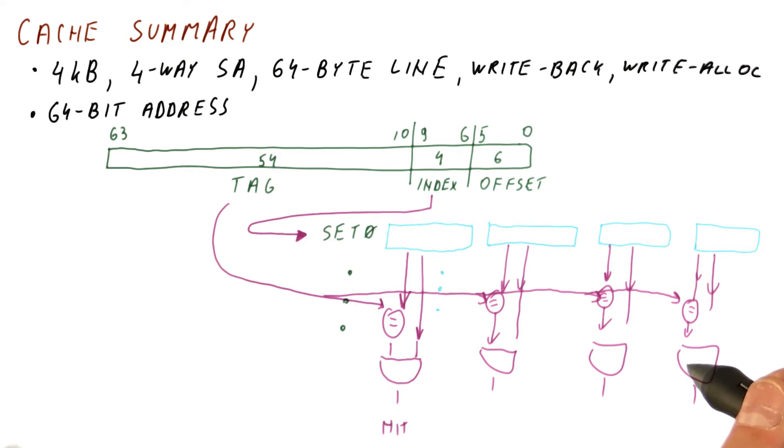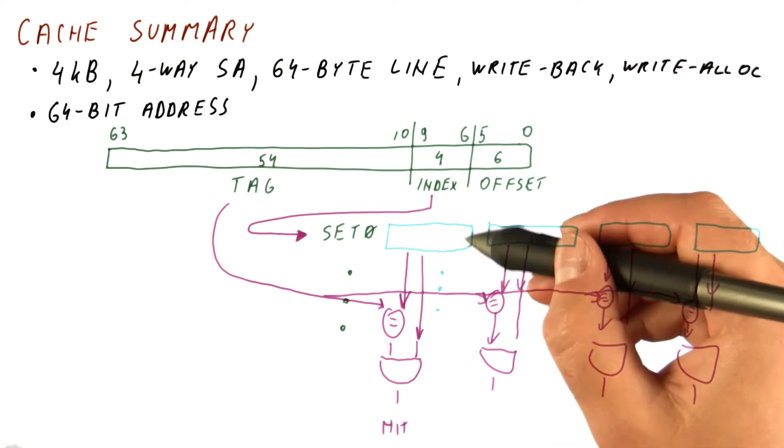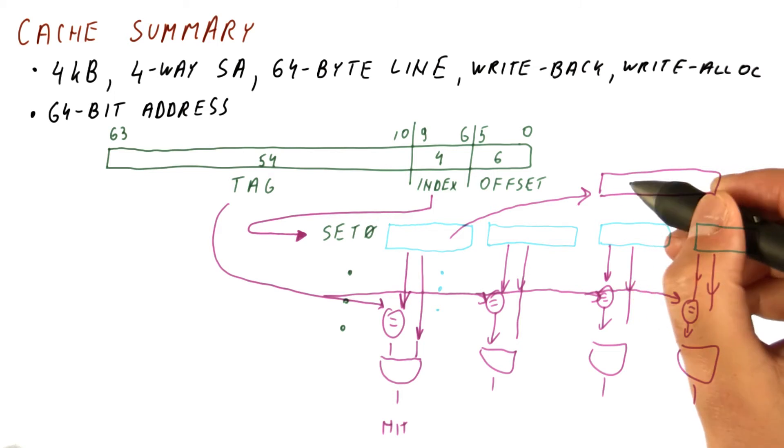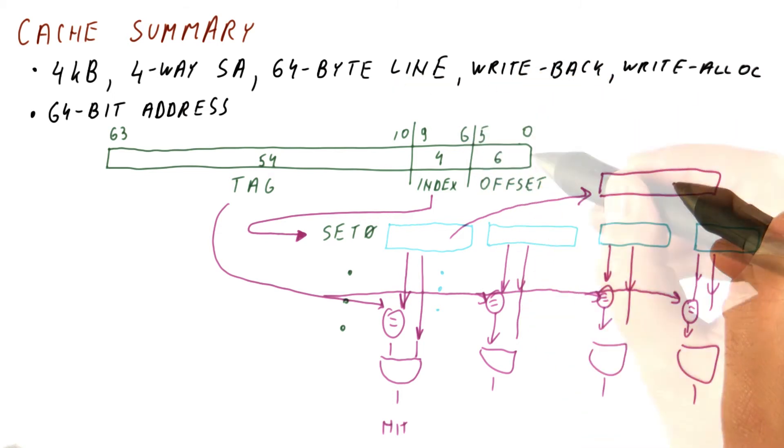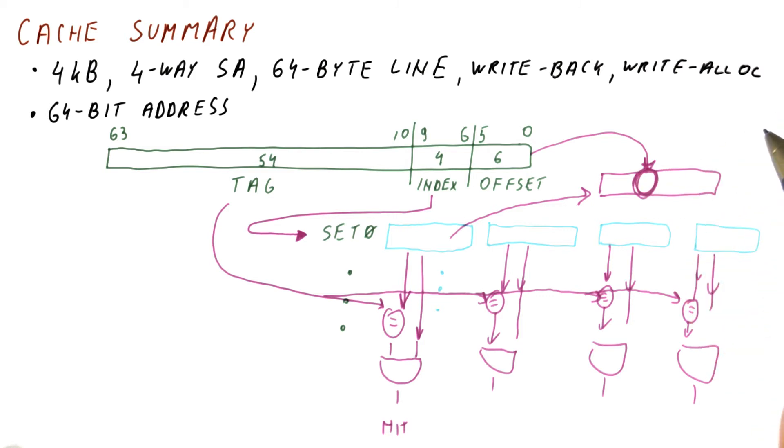In that case, what we do is we find which one had a hit, and go back and read out the data for that block. Once the data is read out, let's say this is our 64 bytes of data. We use the offset to tell us where our actual data to return to the processor is.